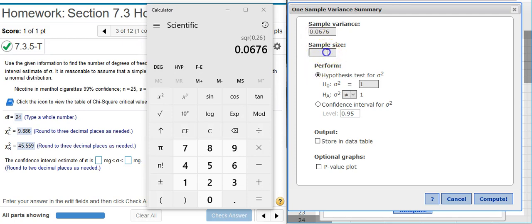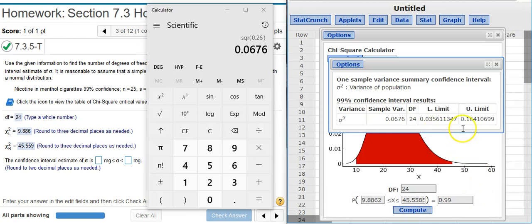The sample size we're given there in the problem. I want to flip this button for confidence interval and make sure that the level matches what's asked for in the problem, which is 99%. I hit compute, and voila, here are the lower and upper limits for my confidence interval estimate.